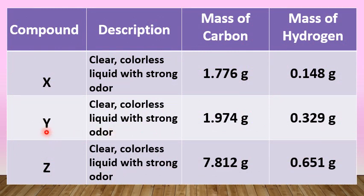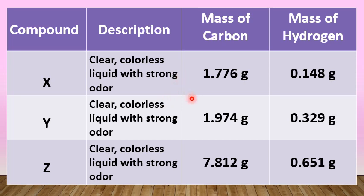As shown in this table, the three compounds X, Y, and Z are all clear colorless liquids with a strong odor, but the mass of carbon and the mass of hydrogen are of varying amounts.